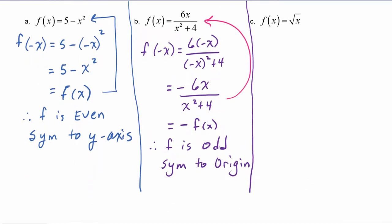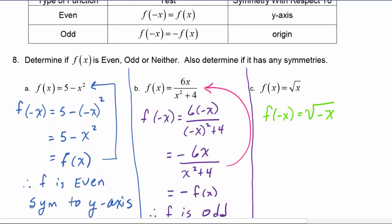And we do f of negative x, we get the square root of negative x. And there's no simplification that can be done here. You want to be very careful that you don't accidentally pull out the negative sign from under the radical. It can't come out front. So since the square root of negative x is neither f of x nor negative f of x, we have to say that f is neither.